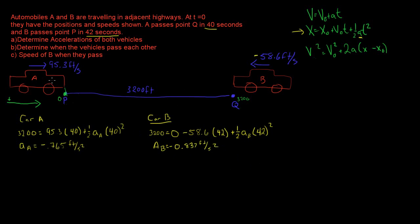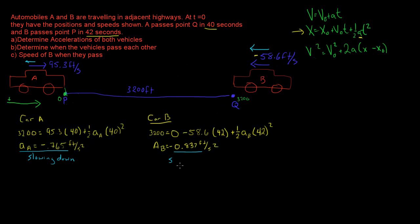This is our answer to Part A: the acceleration of A is negative 0.765 ft/s², and the acceleration of B is negative 0.837 ft/s². Since A is moving to the right with a negative acceleration, A is slowing down. B also has a negative acceleration, but its velocity is also in the negative direction, so its acceleration and velocity are in the same direction — car B is actually speeding up.